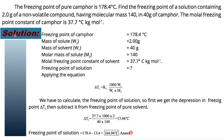The freezing point of pure camphor is 178.4°C. Find the freezing point of a solution containing 2 grams of a non-volatile compound having molecular mass 140 in 40 grams of camphor. The cryoscopic constant Kf for camphor is 37.7°C·kg/mol.